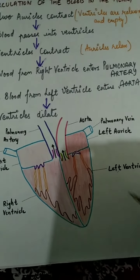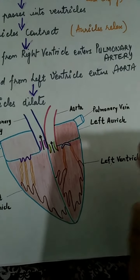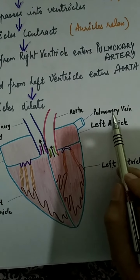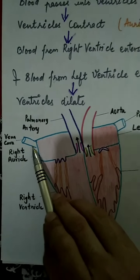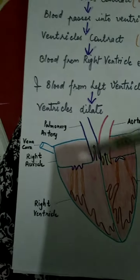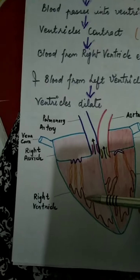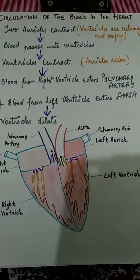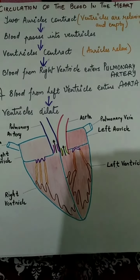One more point: the auricles are getting blood from their respective blood vessels. The left auricle gets oxygenated blood from the lungs via the pulmonary vein, and the right auricle receives deoxygenated blood from all of the body via the vena cava. I have drawn just one — the anterior vena cava, which gets blood from the upper portion of the body — and the posterior vena cava, which gets blood from the lower region of the body. This video explains the circulation of blood in the heart. Thank you.